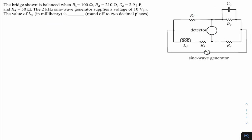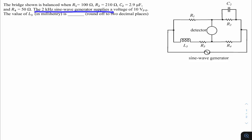This next question is from GATE 2022 instrumentation, measurement subject, bridge concept. The bridge is balanced when R1 = 100 Ω, R2 = 210 Ω, C2 = 2.9 μF, and R4 = 50 Ω. A 2 kHz sine wave generator supplies 10 V peak-to-peak. Find the value of L3 in millihenry.